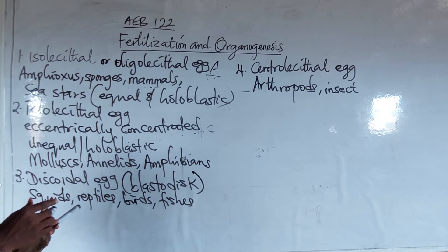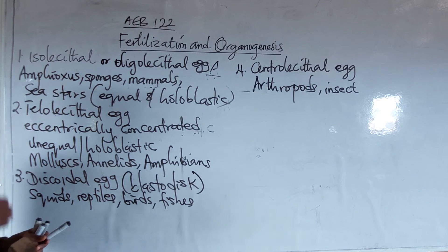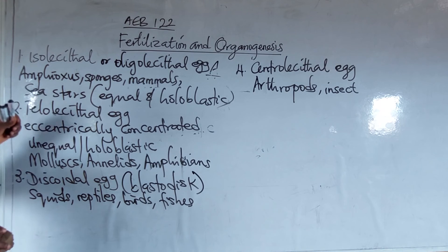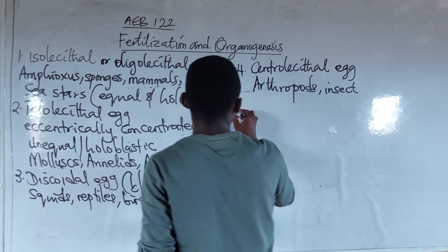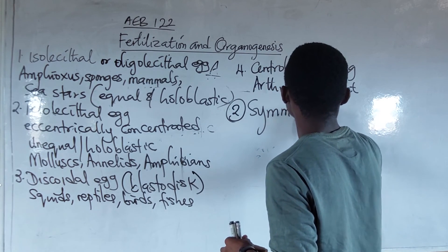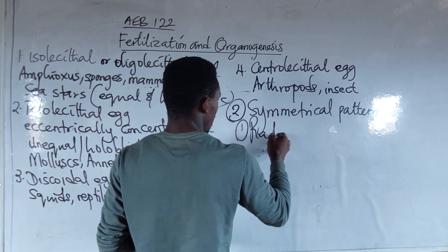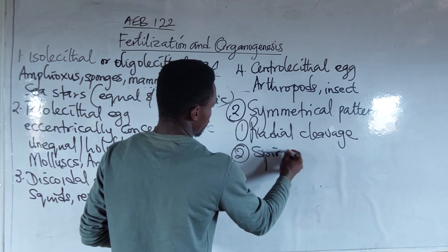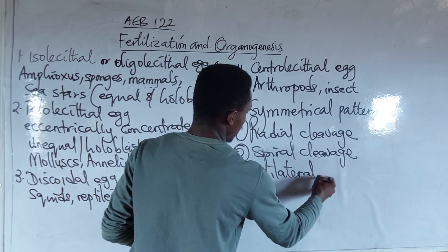In the case of amphioxus, take note that the eggs are arranged in a vertical manner. These four types of eggs are classified based on the quantity of yolk. The other criterion is the symmetrical pattern. Based on the symmetrical pattern, we have three types of cleavage: one, radial cleavage; two, spiral cleavage; and three, bilateral cleavage.